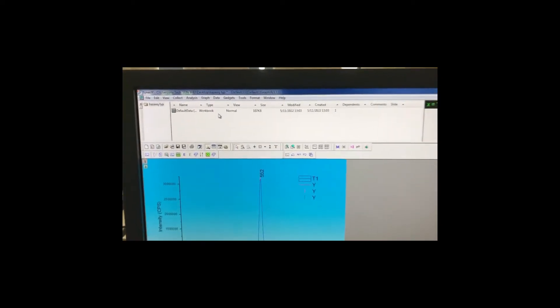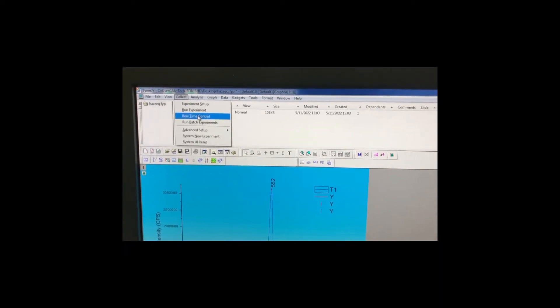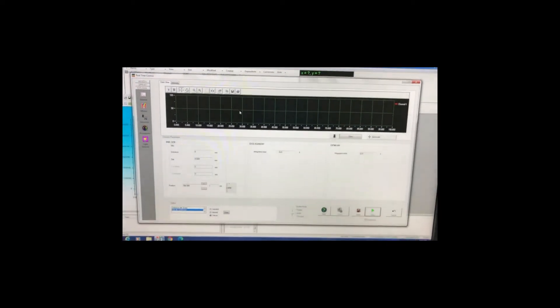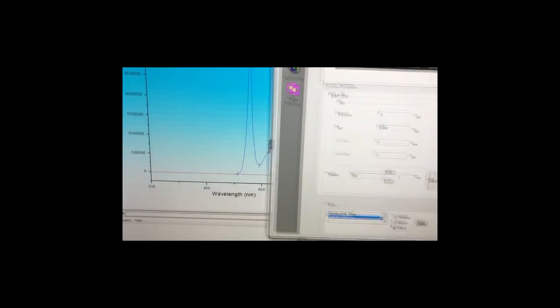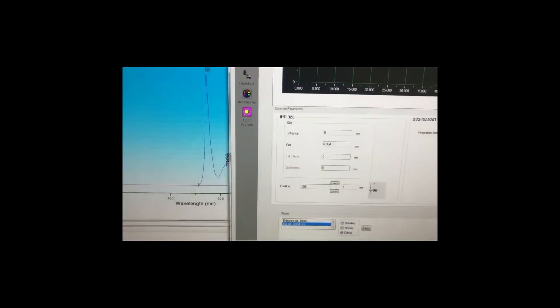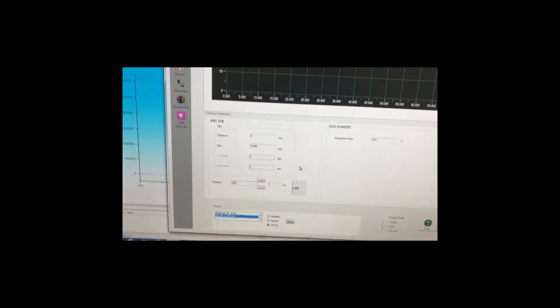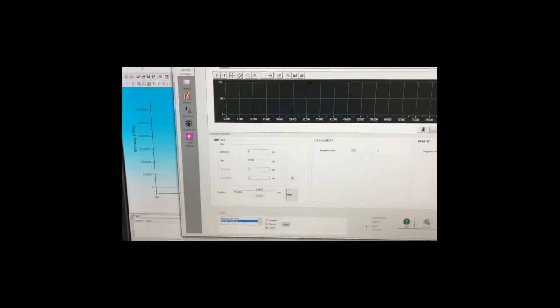To do real time control, first we need to click on collect and click on this real time control. This is what it looks like inside and then you need to change the position here to the number that we have got just now, 552. Change it to 552 and then you click enter.